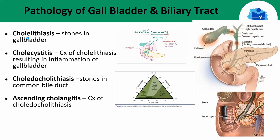Gallstones form when bile stored in the gallbladder hardens into pieces of solid material. This requires three conditions. First, the bile must supersaturate itself with cholesterol — either excess cholesterol with normal bile salts, or normal cholesterol with decreased bile salts. Second, accelerated cholesterol crystal nucleation — the rapid transition from liquid to crystal — which occurs when there are excess nucleation factors or absence of nucleation inhibitors. Third, gallbladder hypomotility, which causes crystals to remain in the gallbladder for a longer period of time.